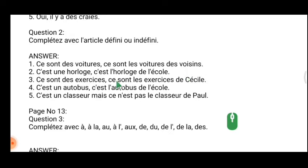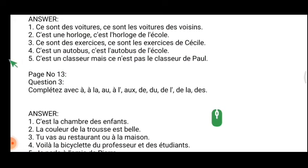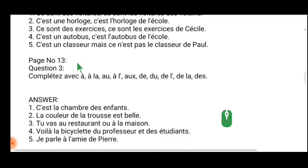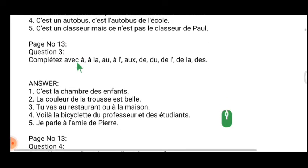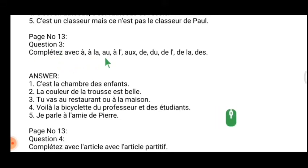Likewise you can revise this exercise — 'l'article défini ou indéfini'. Numbers three, four, and five you can work out on your own. Next, question number three — Roman numeral three — 'Complétez avec à la, au, à la, à la poste, ou au' — this is the combination of prepositions.